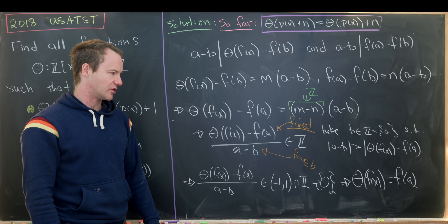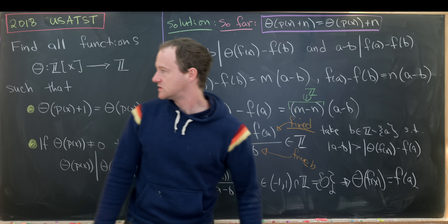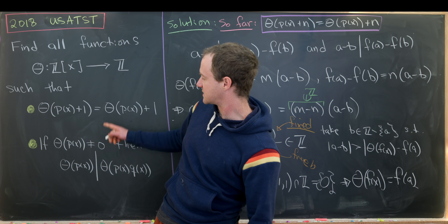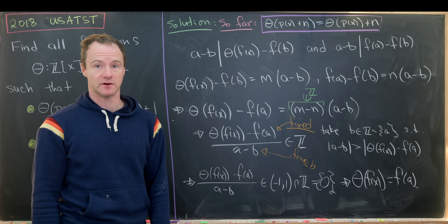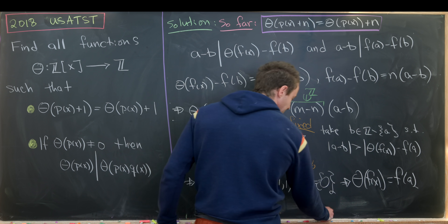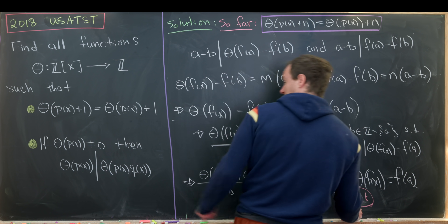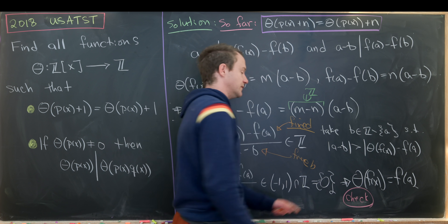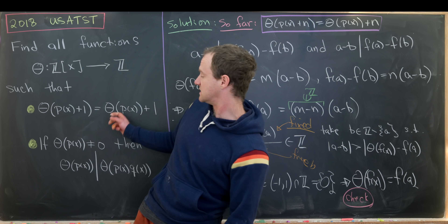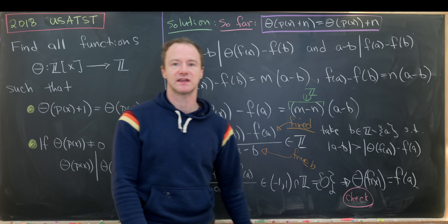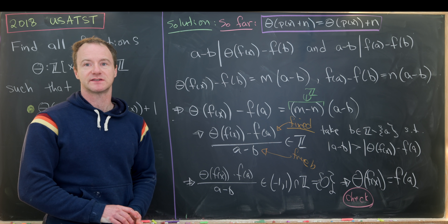We've shown that any function satisfying the two conditions must be the evaluation function at x = a. To fully finish, you'd also need to verify that the evaluation map actually satisfies both given conditions — I'll leave that as an exercise. And that's a good place to stop.